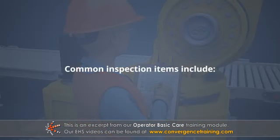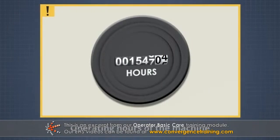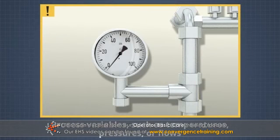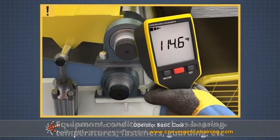Common inspection items include: operating hours of the machine, fluid levels such as oil or fuel, process variables such as temperatures, pressures, or flows, and equipment conditions such as bearing temperatures, fasteners, guarding, etc.